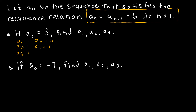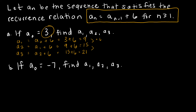To find a(sub 1) take a(sub 0) + 6; to find a(sub 2) take a(sub 1) + 6. With a(sub 0) = 3: a(sub 1) = 3 + 6 = 9, a(sub 2) = 9 + 6 = 15, and a(sub 3) = 15 + 6 = 21. This is an arithmetic sequence — we're just adding 6 each time. It can be written in closed form as a(sub n) = 3 + 6n.